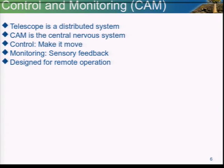We also monitor parameters that influence data quality and store telemetry information like antenna positions, because scientists later when they process the data will need to know exactly where the antennas were pointed during the observation. Remote operation is very important for us — we like to keep humans away from our telescope because we emit radio frequency interference, and that's our enemy. Network transparency is important, and that's also why we can give you a live demo today.